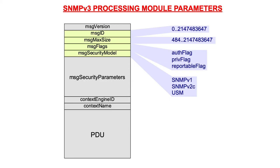However, if IP fragmentation is used, implementations may also support 64 kilobytes. The message flags indicate if the message is authenticated and/or encrypted. The reportable flag indicates if the sender is prepared to receive report PDUs, which can be used internally by SNMP v3 for administrative purposes. Finally, the message security model indicates if the user security model as defined in RFC 3414 is used or some other security model.